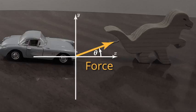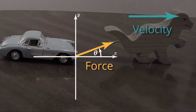We can also separately represent the velocity as a vector, with its own magnitude and direction. Notice that in this example, the velocity is in a different direction than the force.